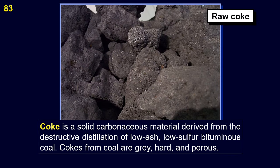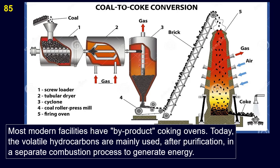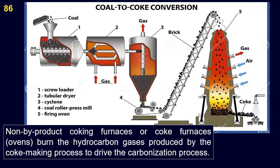Coke is a solid carbonaceous material derived from the destructive distillation of low-ash, low-sulfur bituminous coal. Volatile constituents of coal — including water, coal gas, and coal tar — are driven off by baking in an airless furnace or oven at temperatures as high as 2,000 degrees Celsius, which fuses the fixed carbon and residual ash. Most modern facilities have by-product coking ovens, where the volatile hydrocarbons are mainly used after purification in a separate combustion process to generate energy. Non-by-product coking furnaces burn the hydrocarbon gases produced by the coke-making process to drive the carbonization process.